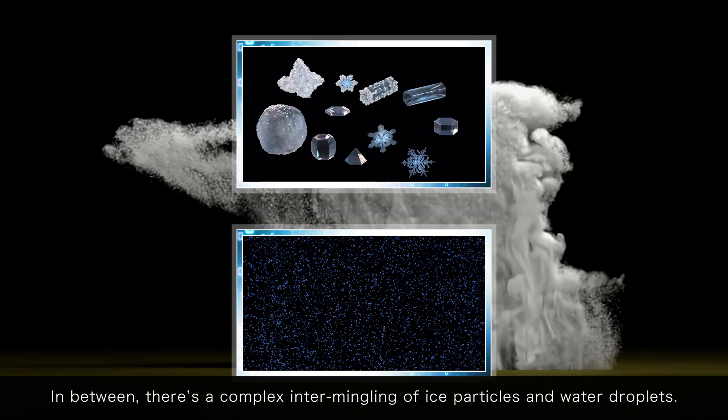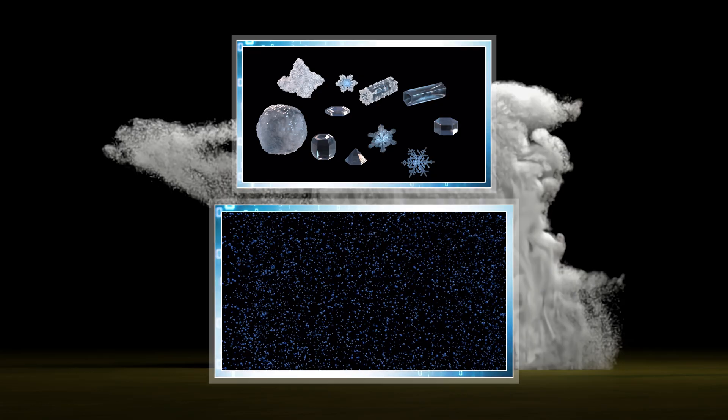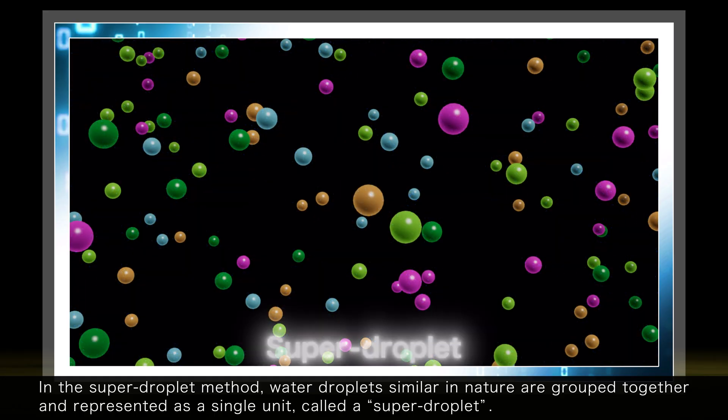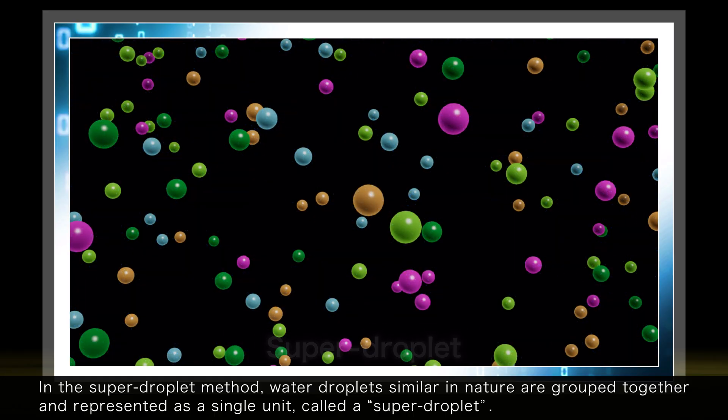In between, there's a complex intermingling of ice particles and water droplets. In the super droplet method, water droplets similar in nature are grouped together and represented as a single unit, called a super droplet.